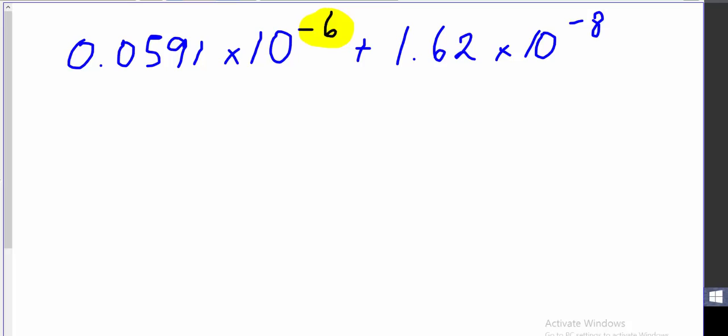I'm going to do a question with you that uses exponents. And here's the question that I've given you. It's very similar to one of the practice questions. 0.0591 times 10 to the negative 6 plus 1.62 times 10 to the negative 8. Now we're dealing with some exponents. And you can go ahead and apply the very same rules with decimal places that we've done already. However, you do want to get your values in a format that you can compare them. So you notice that on the first piece of data, we have an exponent of negative 6. And then in the second piece of data, we have an exponent of negative 8. So the second number is considerably smaller than the first number.